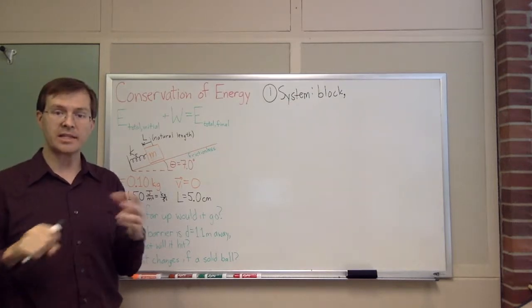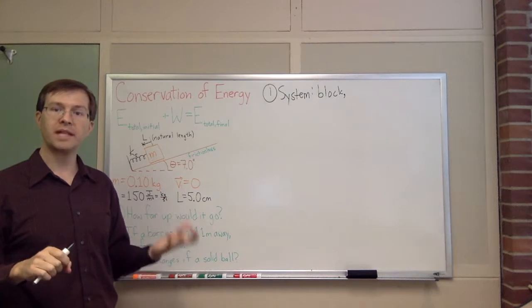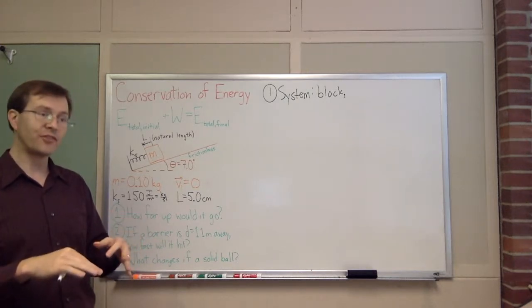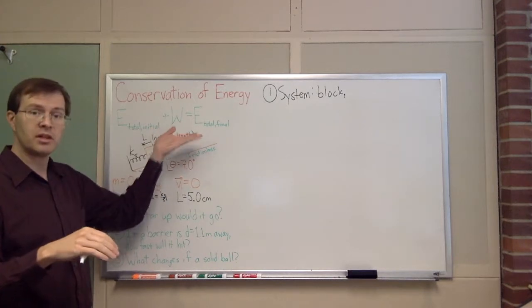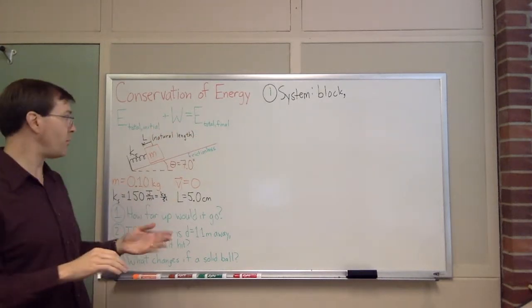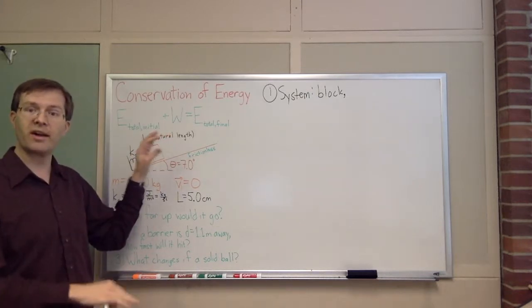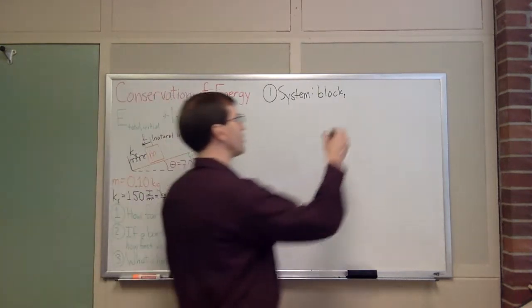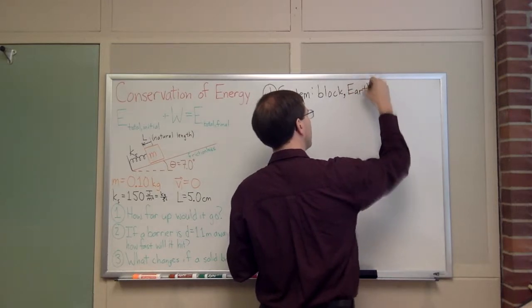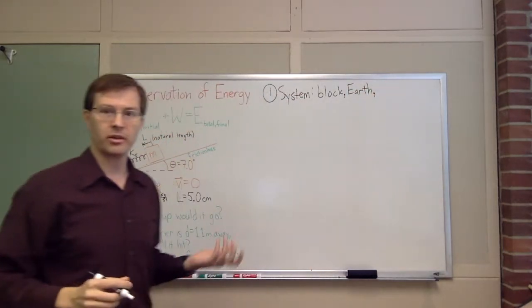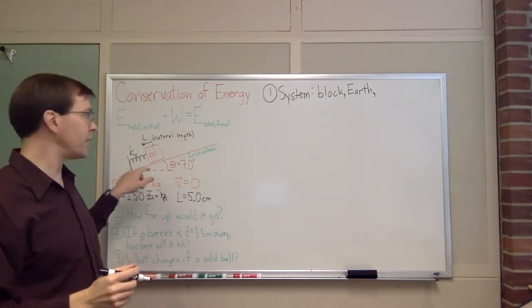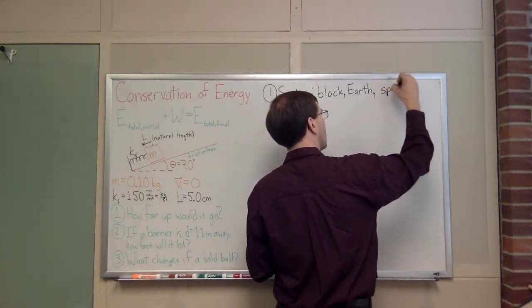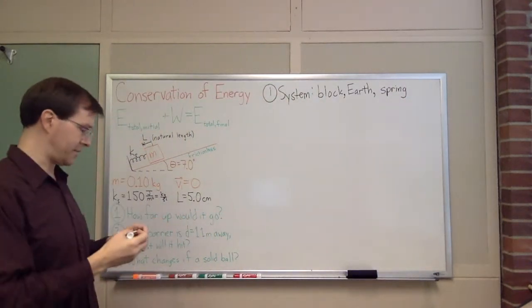It's going to be a lot easier if we consider potential energy. Potential energy is energy due to interactions between different parts of your system. And for those interactions to be energy in your system, both parts have to be in the system. For example, the block is interacting with the Earth by the gravitational interaction, so the Earth, the planet Earth, has to be part of my system. Similarly, the spring is also an important part of this story, and so the spring should also be part of my system. So I've chosen my system.